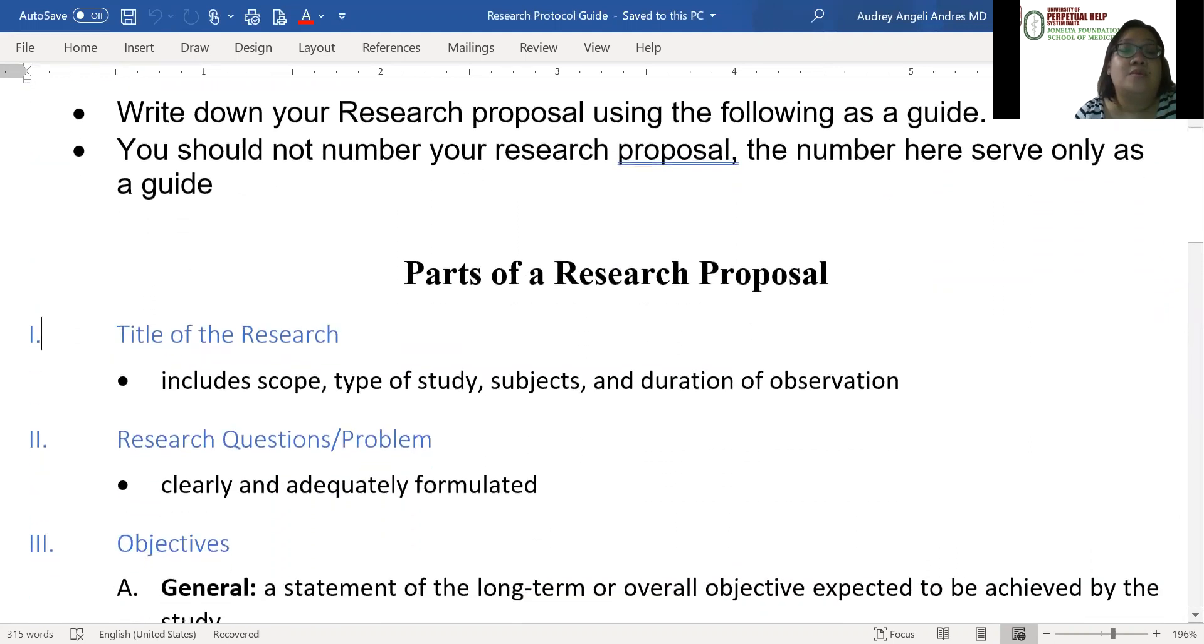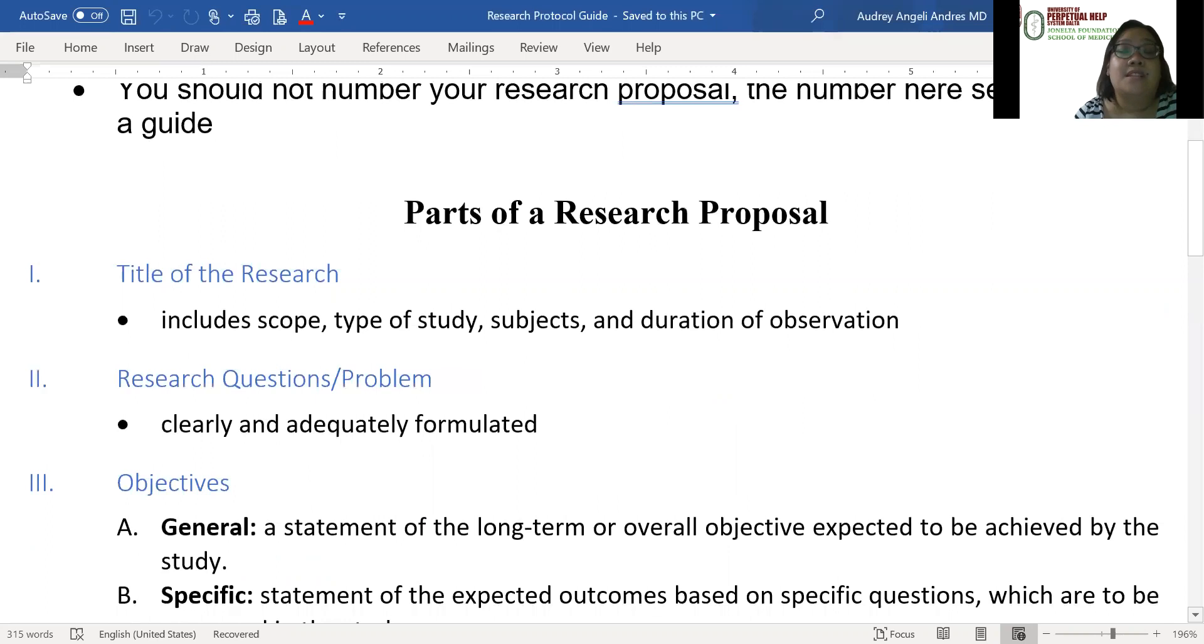The title should include the scope, type of study, subjects, and duration of your observation. Make it as specific as possible: what is your study population, what is your intervention, what is your expected outcome...